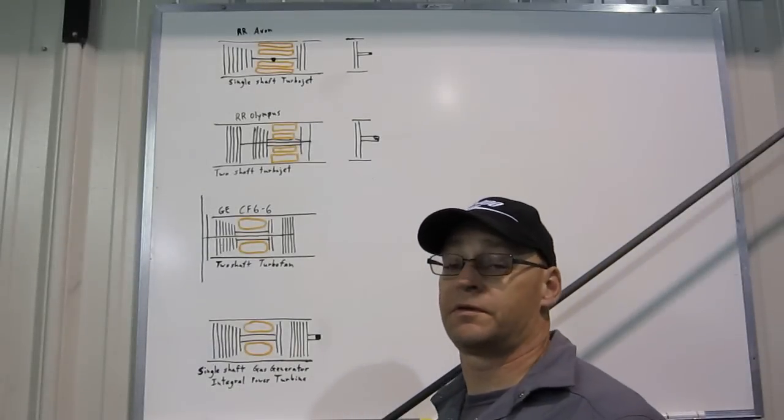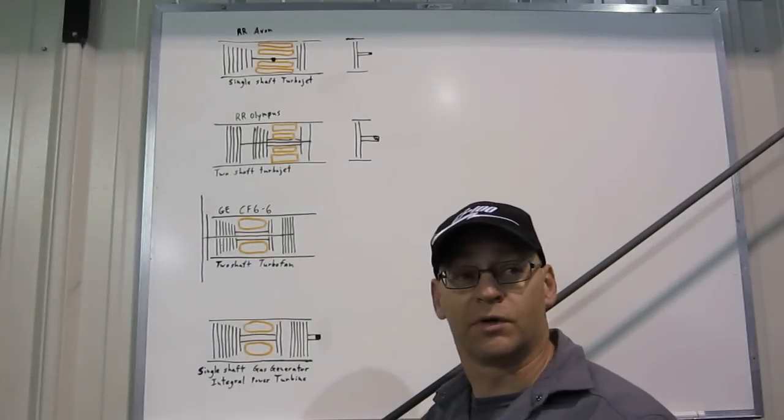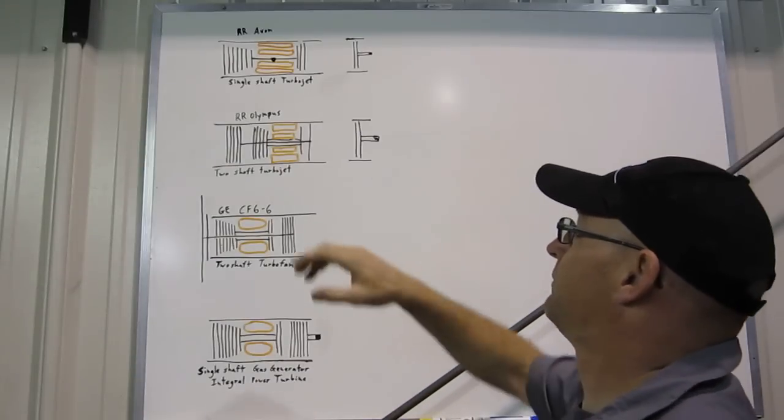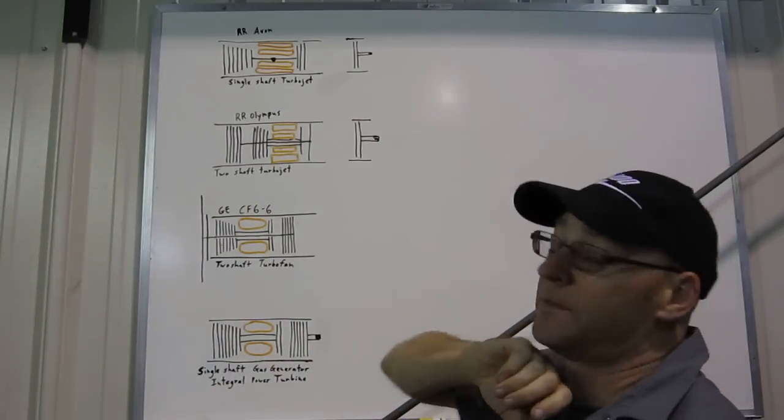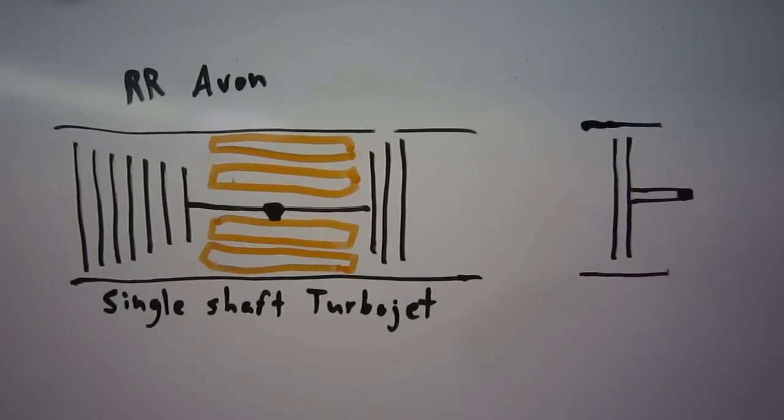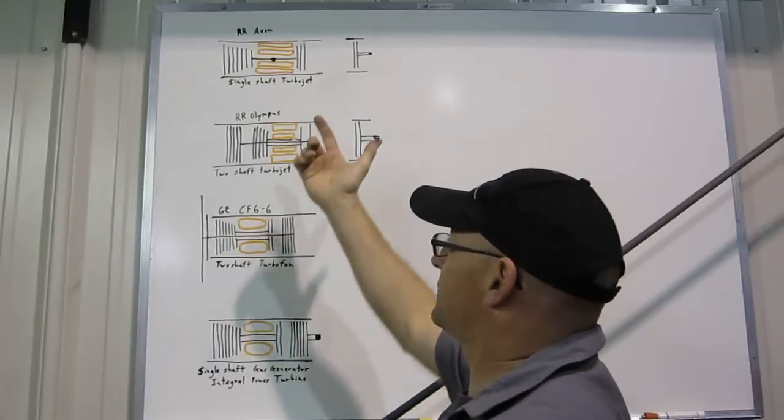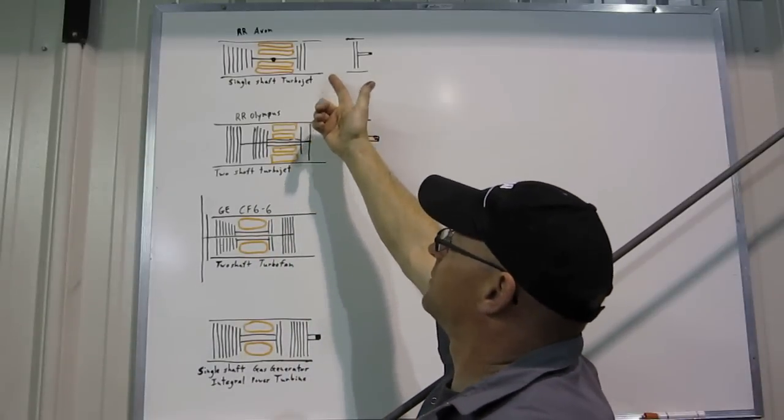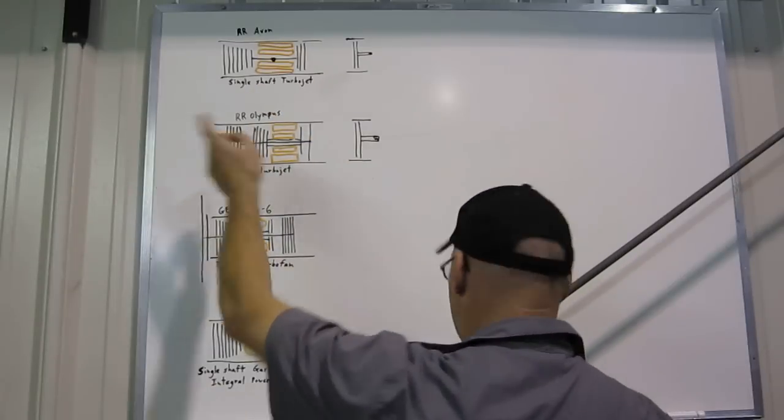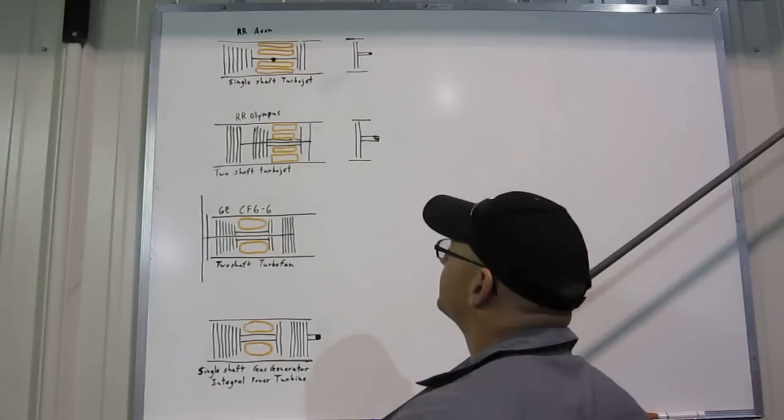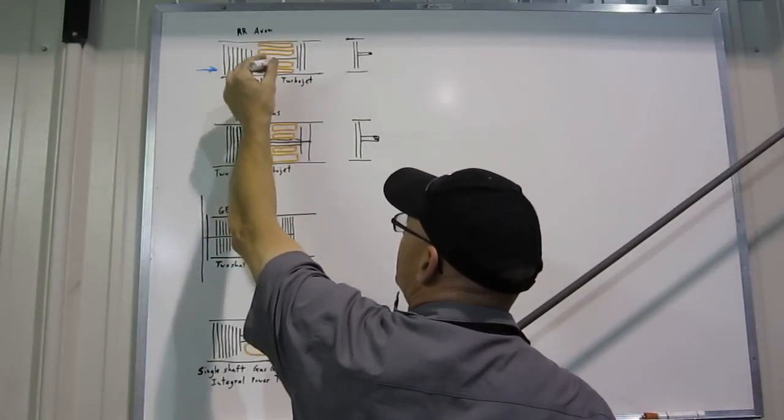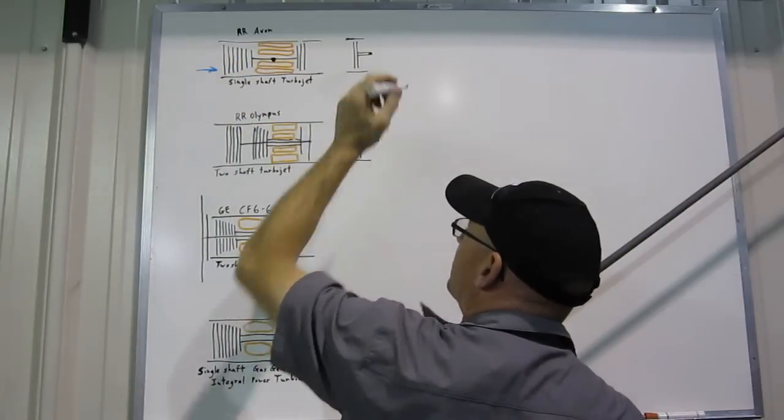Okay, a couple more diagrams to further explain some of the more subtle differences. I've drawn on the top our typical industrial engine, which is a single spool gas generator. It's basically a turbojet engine minus the nozzle, and I've included the power turbine. All of the air going in goes through the entire engine, is combusted with the fuel and comes out the back through the power turbine.